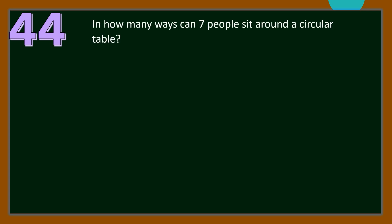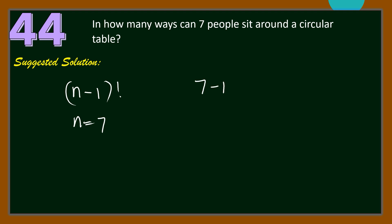Number 44. In how many ways can 7 people sit around a circular table? For circular permutation, our formula is n minus 1 factorial. Since n is equal to 7, that will be 7 minus 1 factorial, which is 6 factorial. 6 factorial is 6 times 5 times 4 times 3 times 2 times 1 by definition, and this is equal to 720 ways.